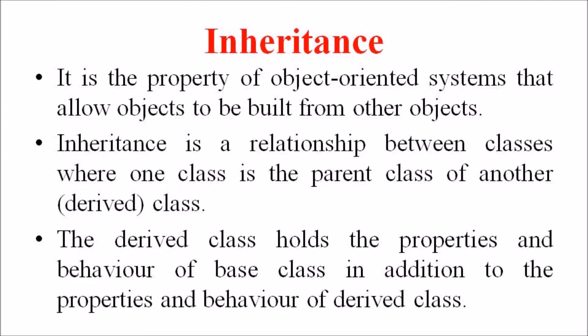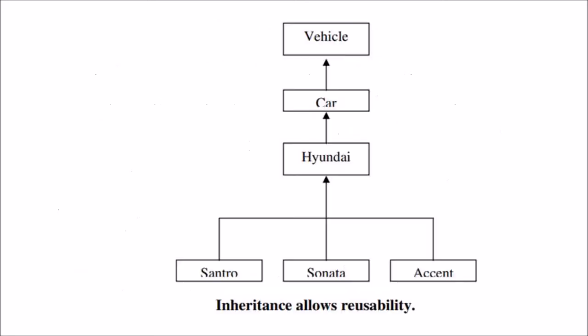Secondly, we are discussing the term inheritance. It is a property of the object-oriented system that allows objects to be built from other objects. Inheritance allows explicit advantage of the commonality of objects when constructing new classes. Inheritance is a relationship between classes where one class is the parent class and another is the derived or child class. The derived class holds the properties and behaviors of the parent class in addition to its own.